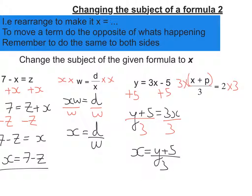So the 3's on the left hand side, they cancel, so there's 1 on top, 1 on bottom. So I'm just left with x plus p is equal to 2 times 3, which is 6.